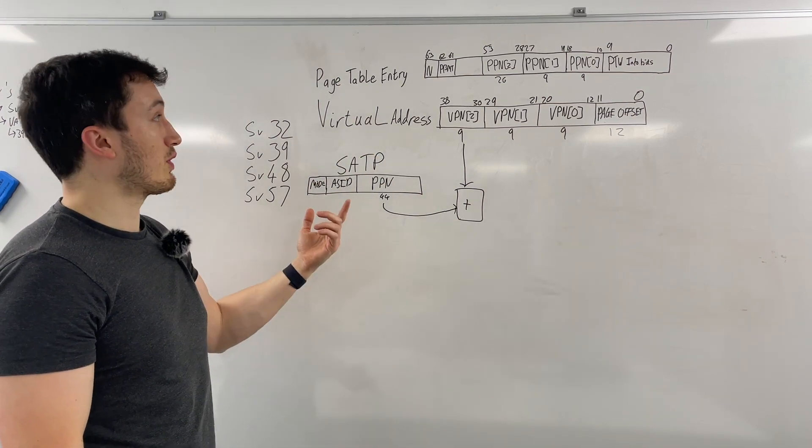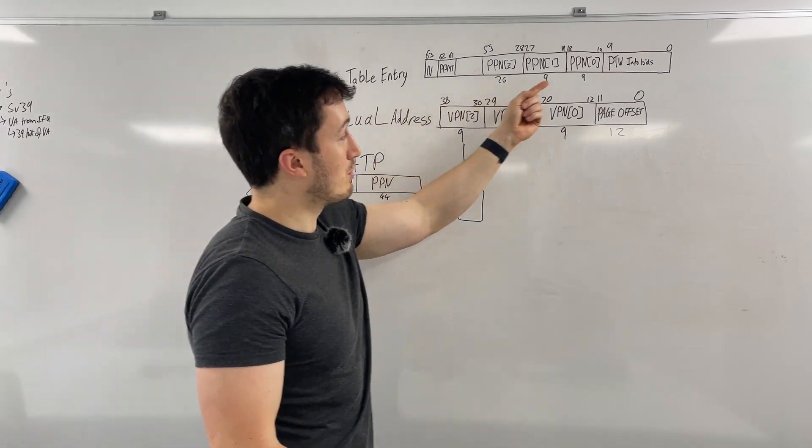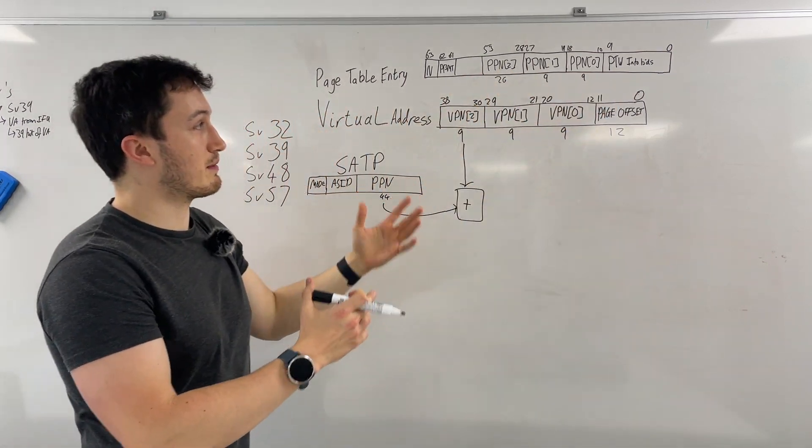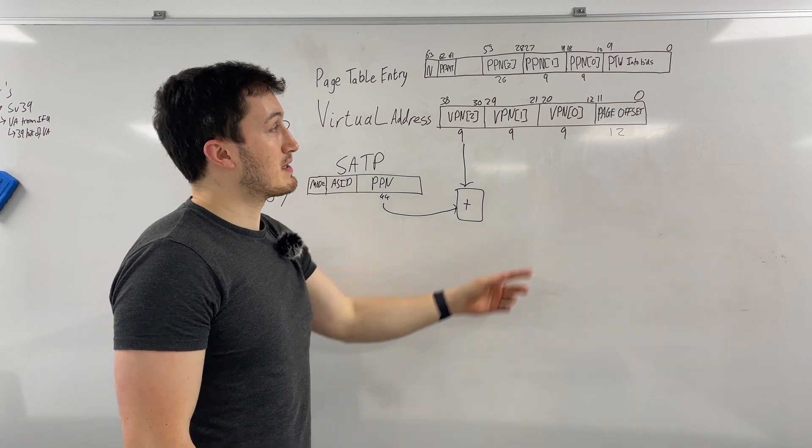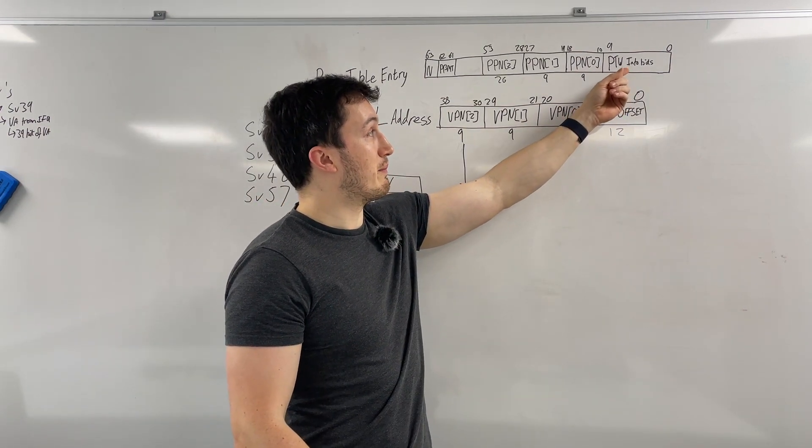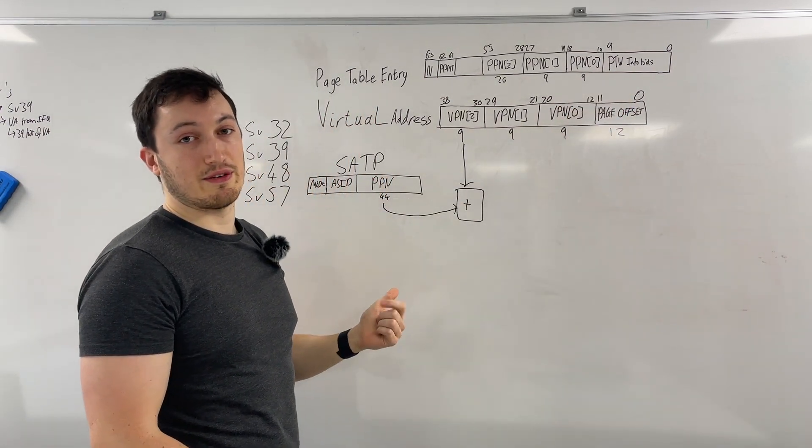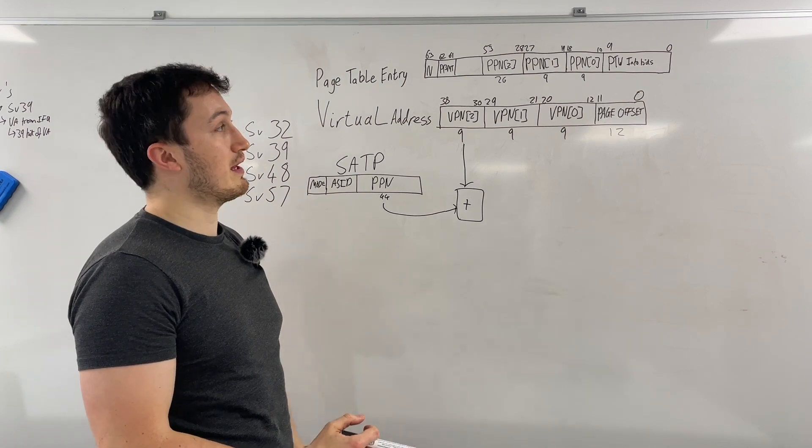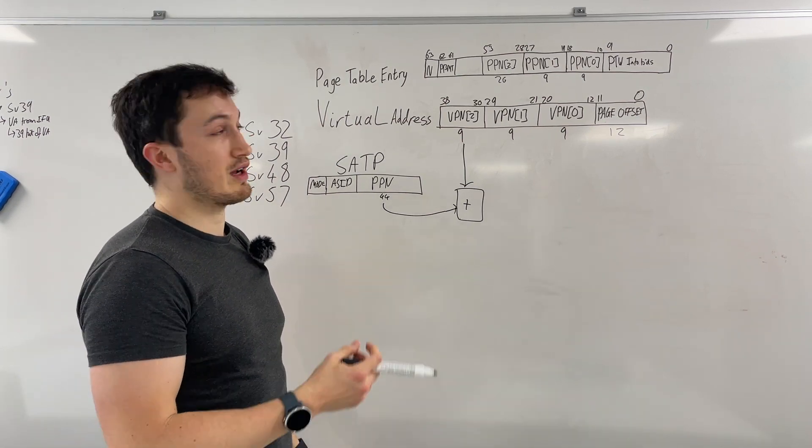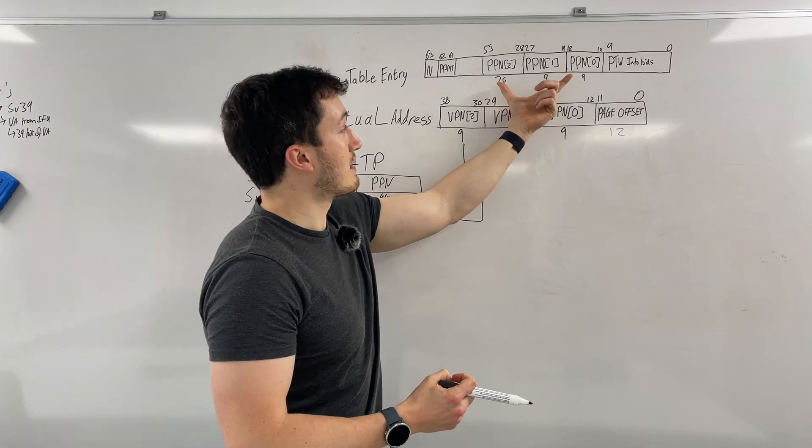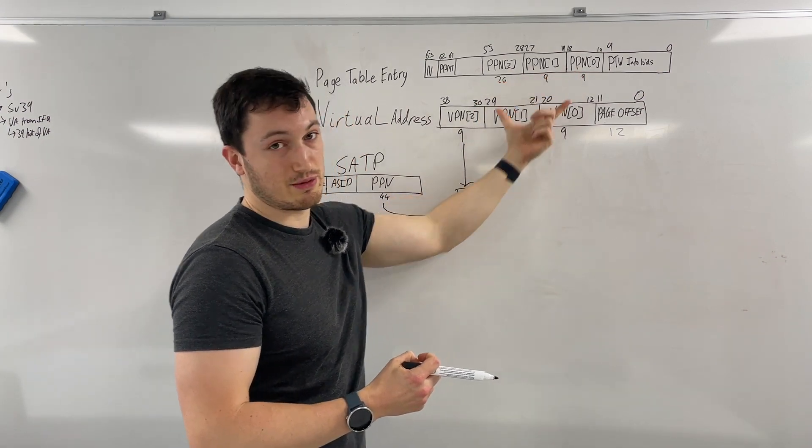This page table entry will come back and it will look more or less like this, slightly simplified. But the important bit is there's some information bits in the page table walker, saying if it's valid, if it's a leaf page or non-leaf page, what are the permissions, like read, write or execute. And it also has this PPN information here as well.